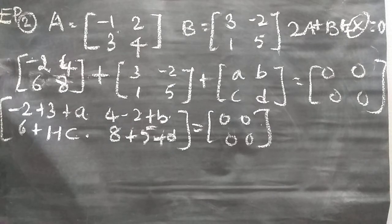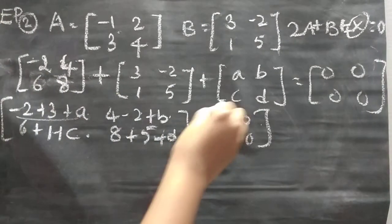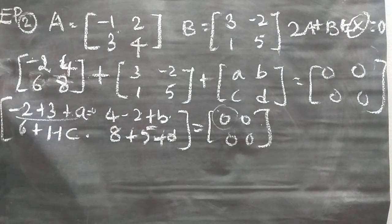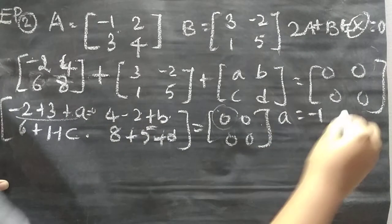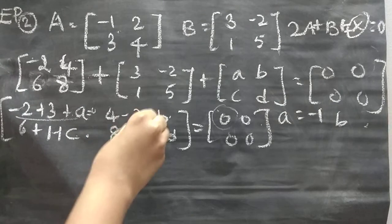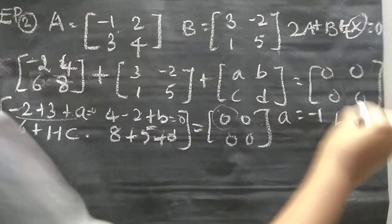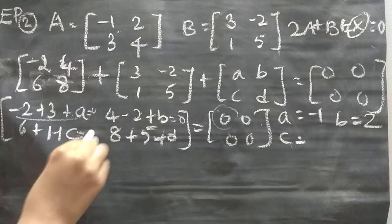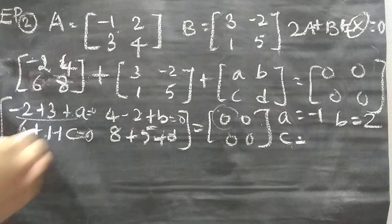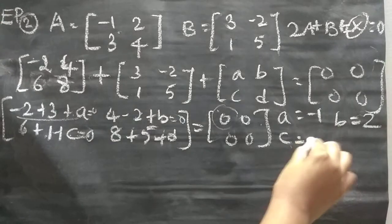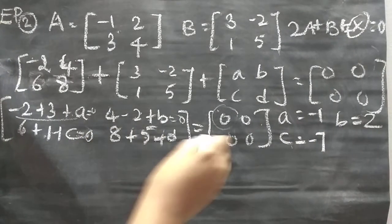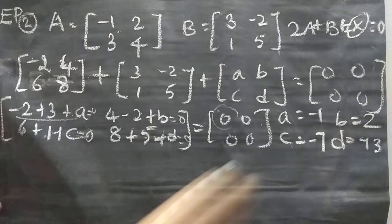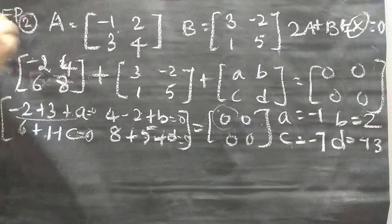Solving: −2 + 3 + A = 0, so A = −1. Then 4 − 2 + B = 0, so B = −2. Then 6 + 1 + C = 0, giving C = −7. And 8 + 5 + D = 0, giving D = −13. So X = [−1, −2; −7, −13]. Option D.